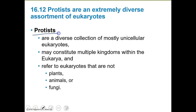Protists are an extremely diverse collection of unicellular eukaryotes. That's about the main thing they have in common — they are one cell and they're eukaryotes, meaning these are cells that have a nucleus.